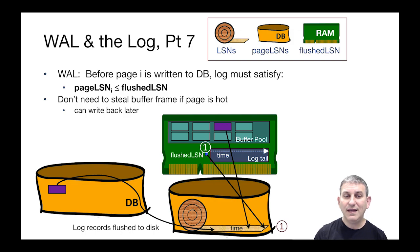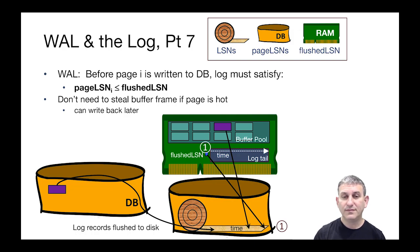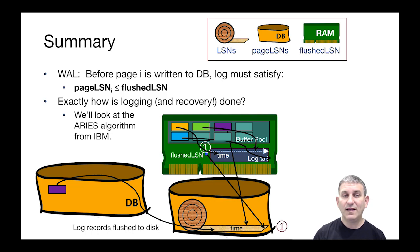Notice that if we want to steal that buffer frame, we certainly can do so — now that the page has been logged, it can be written to disk at any time. But we don't have to steal that buffer frame if the page is hot; we can leave the page in the buffer pool. Just because we wrote it to disk doesn't mean we have to flush it. To summarize, the write-ahead logging protocol can be expressed as an inequality: the page LSN of a page must be less than or equal to the flushed LSN. The page LSN tells us what log record is the update to that page, and the flushed LSN tells us whether that update has been written to the log device yet.